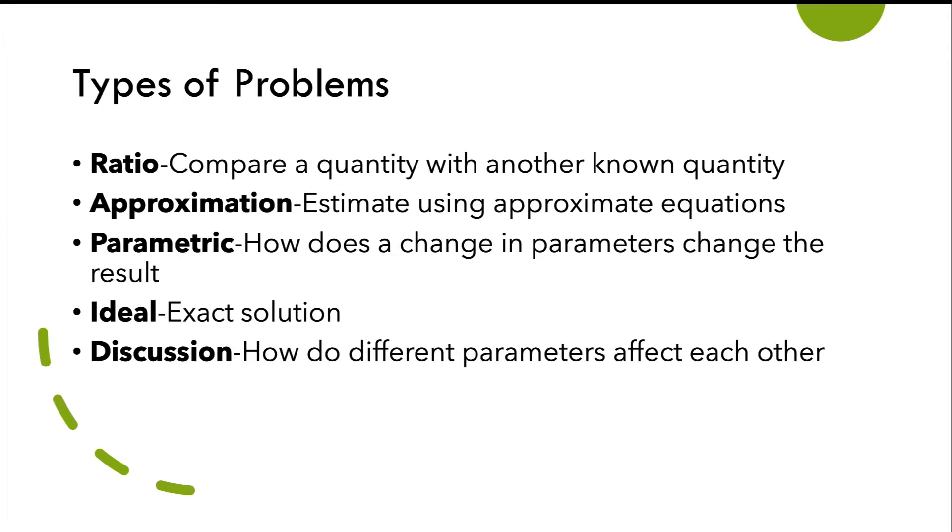Before I cover that systematic approach, I just want to review a few different types of problems that you may come across. The first is what's called a ratio problem. This is where I compare the quantity of one result with maybe another known quantity or another calculatable quantity. I have approximation problems, which is where I estimate using approximate equations. This might be like saying, let's calculate the volume of air inside of this room. Obviously, we'll leave out a lot of details and just get sort of a first-order approximation.